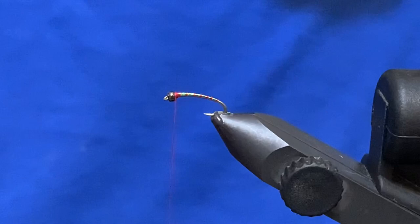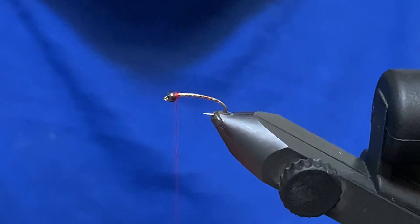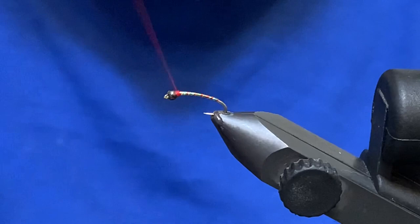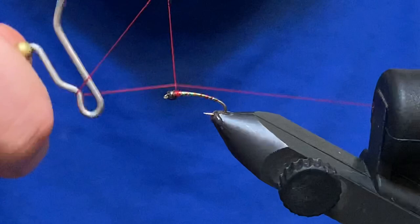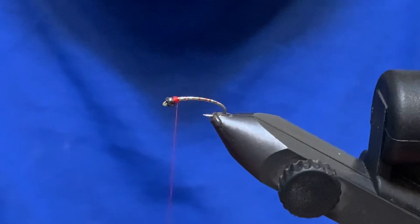Now if you want to at this point, you can take a Sharpie and blacken the red thread, but I quite like the little red collar on this thing. So we're just going to go ahead and go straight into a whip finish. Like so, trim that out of there.